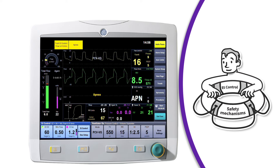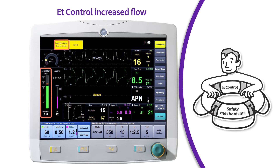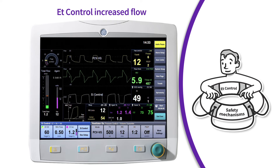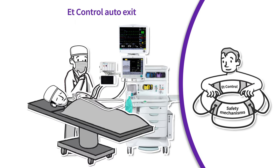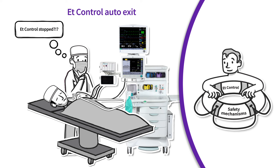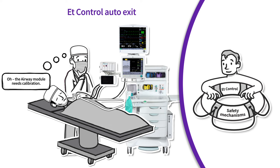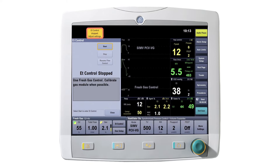With end-tidal control, there are safety mechanisms in place to help clinicians protect the patient. These include the delivery of increased flow when temporary issues arise, such as a leak — end-tidal control will automatically resume when the issue is resolved. Another safety mechanism is automatic exit from end-tidal control when an issue arises that requires clinician interaction or cannot be resolved during the case, such as an airway module calibration. When this occurs, the system automatically exits ET control and resumes fresh gas control. After an automatic exit, the anesthesia provider will need to manually re-enter end-tidal control.